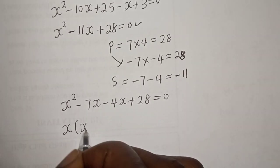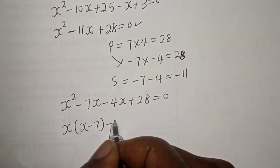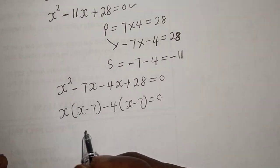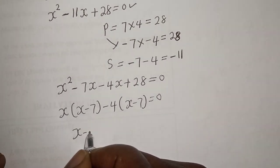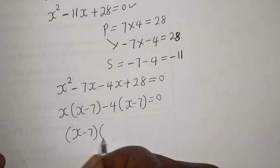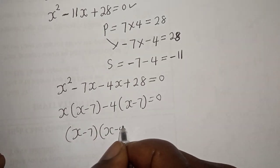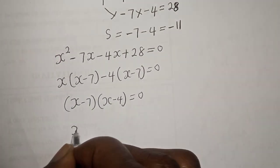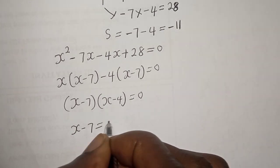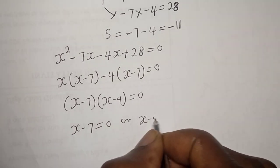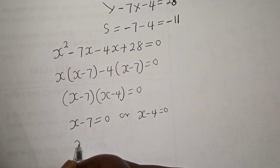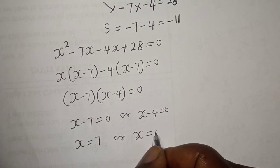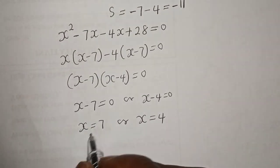Factoring: S minus 7 is common, giving us S minus 7 multiplied by S minus 4 is equal to zero. Therefore S minus 7 equals zero or S minus 4 equals zero. From here, S is equal to 7 or S is equal to 4. Now let's check to confirm our answers.